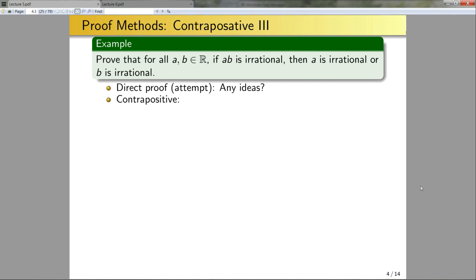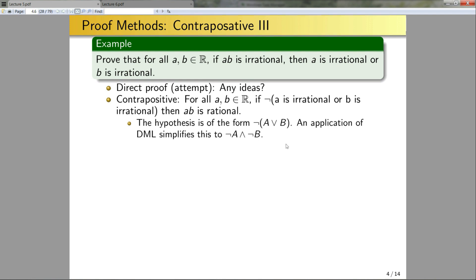Again, pause the video and see if you can come up with the contrapositive on your own. Okay so what would the contrapositive be? Well it would be for all a and b in r, if not a is irrational or b is irrational, then ab is rational, right? The opposite of irrational is rational. Okay so how do I negate this first statement? Well I can notice that this statement is of the form not a or b. So to negate these type of statements I use De Morgan's law. So applying De Morgan's law would be not a and not b. So if I use this rule to simplify this negation, I would have for all a and b in r, if a and b are rational, then ab is rational.